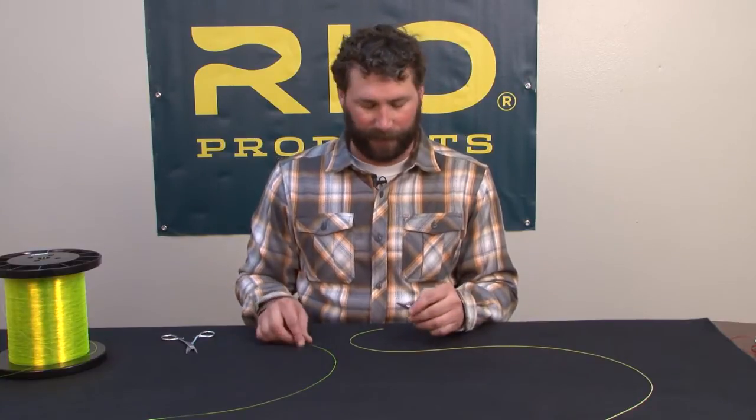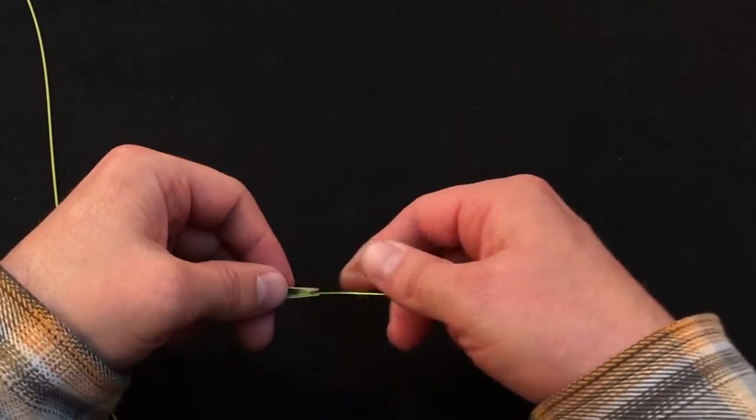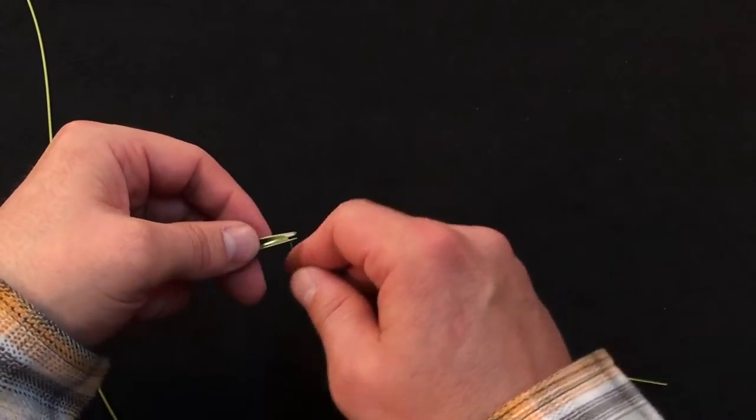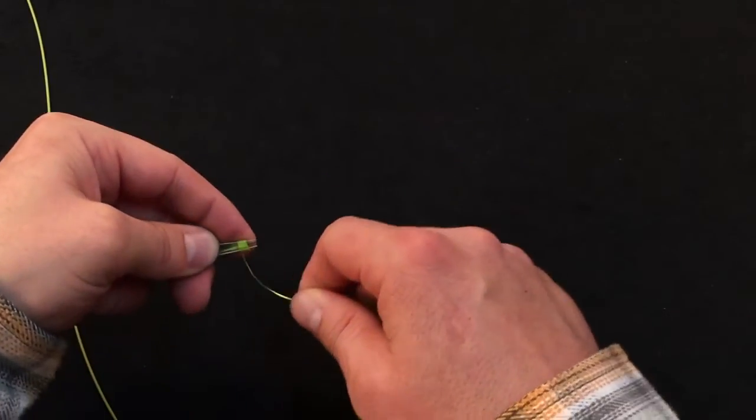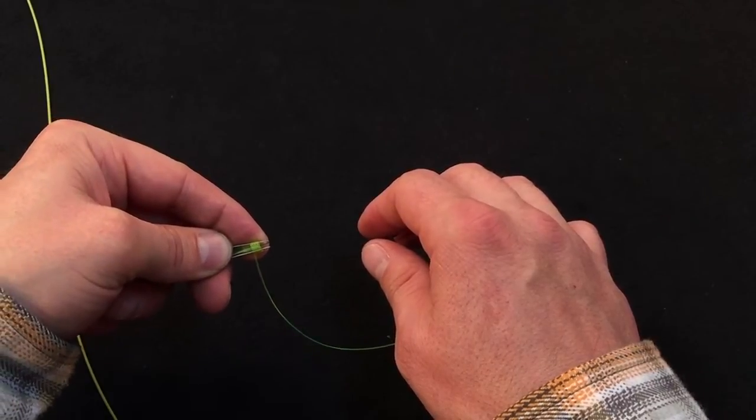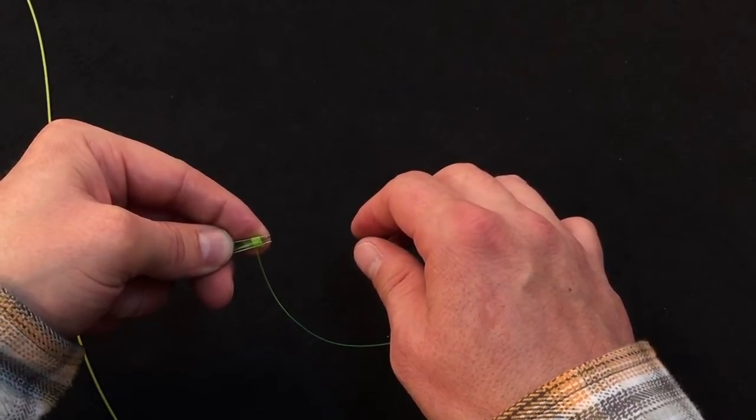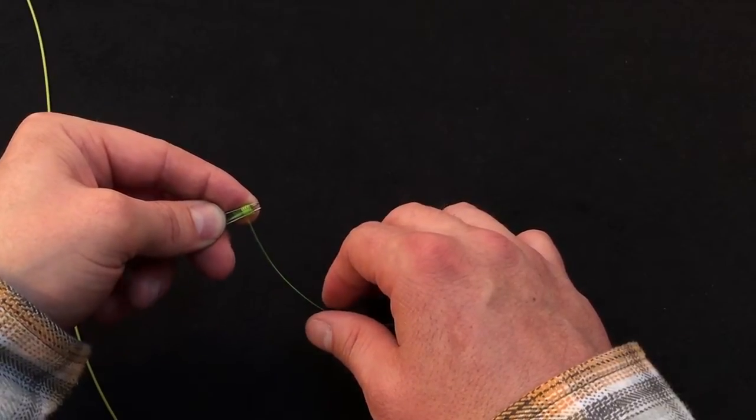To use this tie fast tool, you simply lay your leader in the gutter of the tool. Then we'll take and wrap four, maybe five loops around the tie fast tool. We don't want to use any more than four or five loops because too much mass on the end of a floating line will sink it. So four or five loops is about the perfect balance.